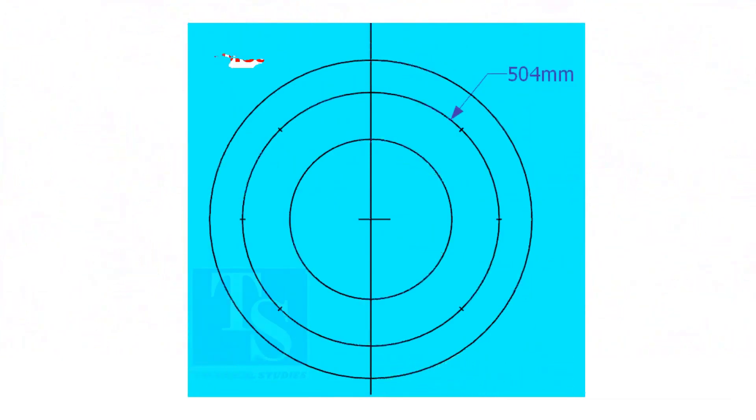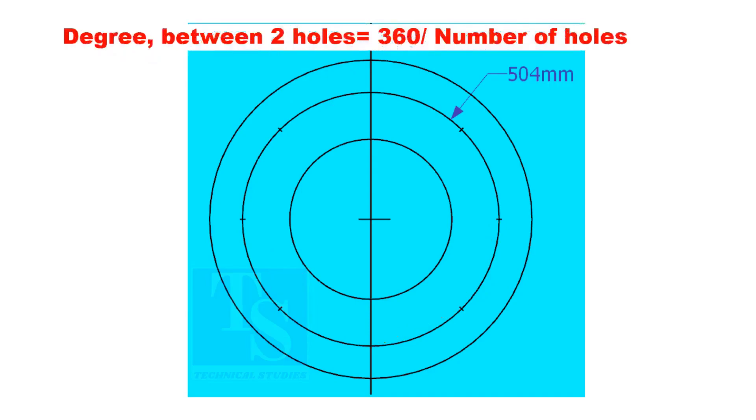Since the number of the holes is 8, divide the PCD into 8 equal parts. To divide the circle easily and accurately, let us find the cord length of the holes. If you divide 360 by the number of holes, you will get the angle between two holes.